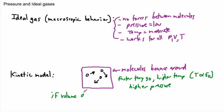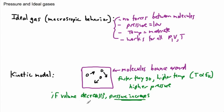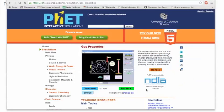If the volume decreases — making a smaller box — the pressure increases. That's because pressure is all about how often molecules hit the walls. And because of that, the temperature also increases. We can look at this with our animation.